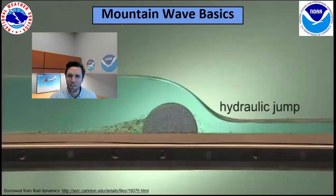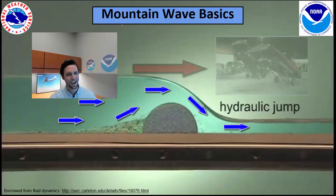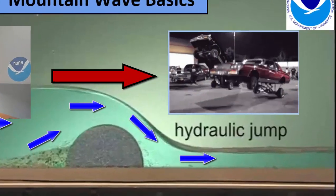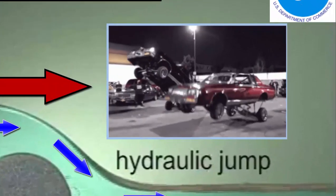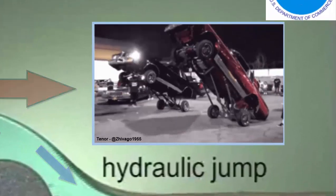Stripping it down to the basics using a fluid model, this illustration depicts what the airflow moving over a mountain would look like and where we would see that hydraulic jump — kind of like what our friends over here are experiencing in their juiced-up lowriders.